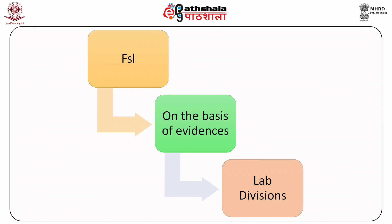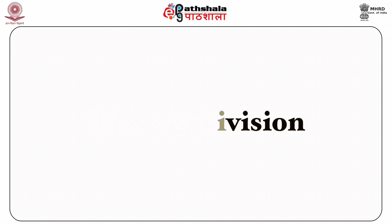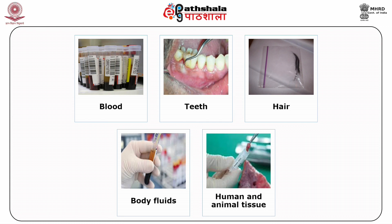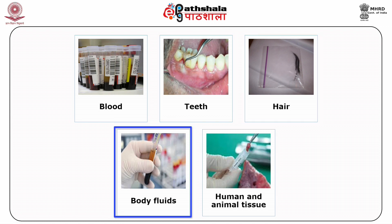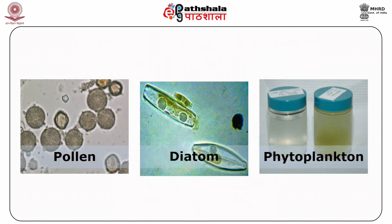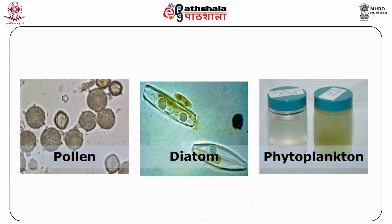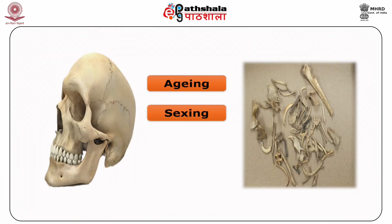Forensic science lab analysis work involves examination of a wide variety of items and substances used as evidences. In the biology division, identification of evidence that comes for examination includes blood, teeth, hair, body fluids and tissues of human and animals, plant materials including pollen, diatom and phytoplanktons. Aging and sexing from skull and other bones are also done in the biology division.